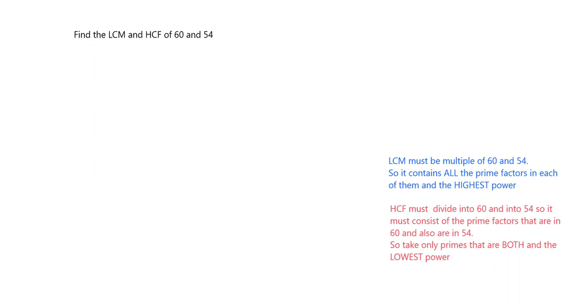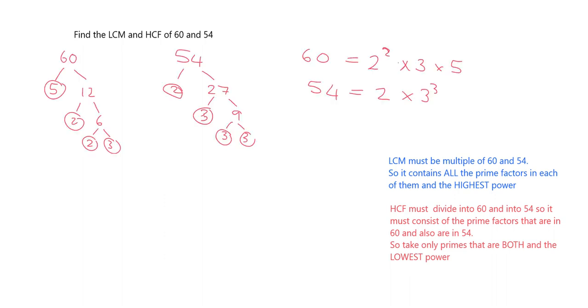Now for you to try: find the lowest common multiple and highest common factor of 60 and 54 using prime factorization. Start with the prime factorization first. Pause the video now and do it. You should have found that 60 = 2² × 3 × 5 and that 54 = 2 × 3³. You might have done it in a slightly different way, but that's the answer you should get. If you didn't, stop and try to correct it.